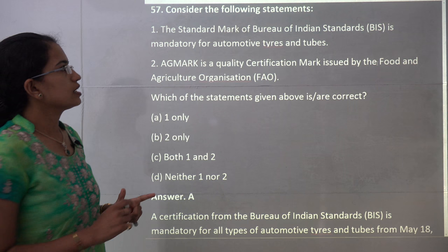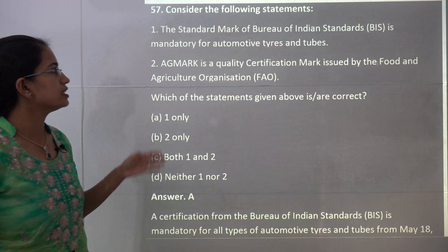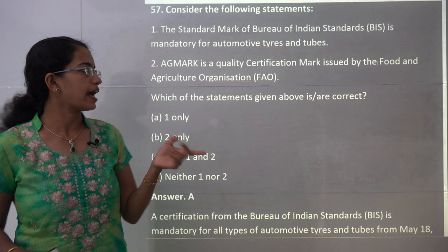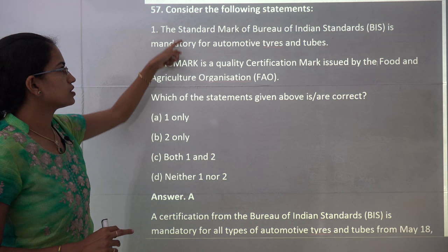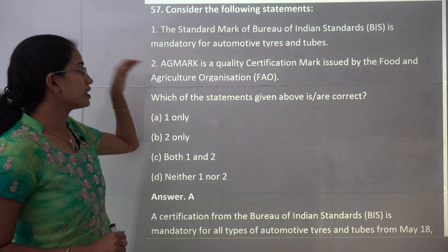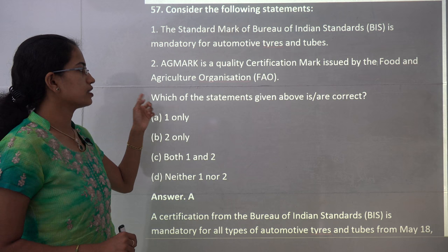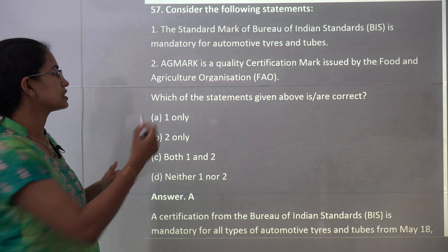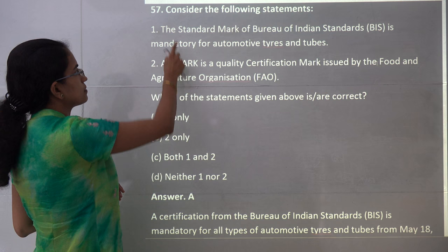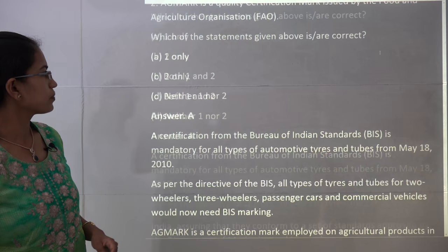The next question is about the BIS standard mark. The Bureau of Indian Standards makes BIS certification mandatory for automotive tires and tubes for 2-wheelers, 3-wheelers, and 4-wheelers — that is correct. However, Eggmark is a quality certification mark given by India, not by the Food and Agriculture Organization. So statement 1 is correct and statement 2 is incorrect, making A the correct answer.